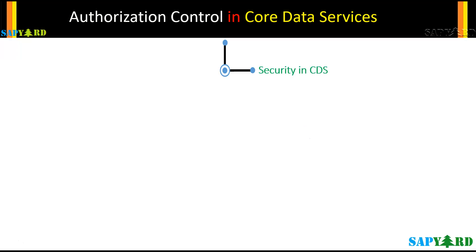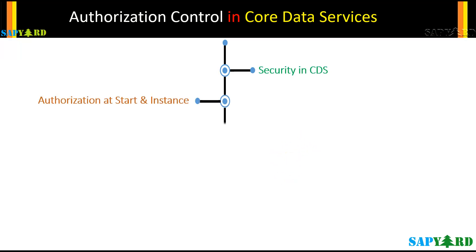Let us dive deep into SAP security related to CDS. Along the way, your normal ABAP authorization concept will also get cleared. We will understand authorization at start and authorization at instance, and learn the difference between these two terms. We will check what activates or imbibes the access control in CDS — that secret sauce is nothing but a line of annotation. We will also see how CDS access control and CDS entity views are linked.